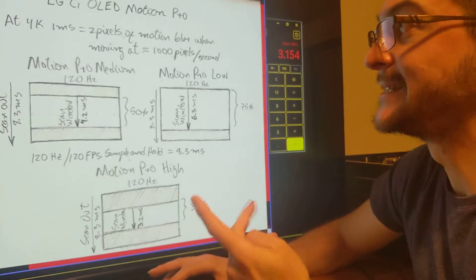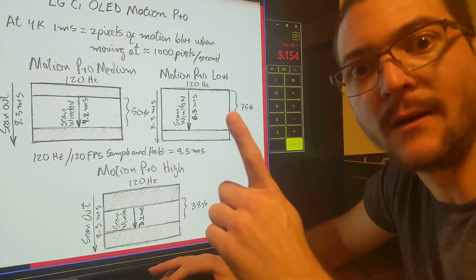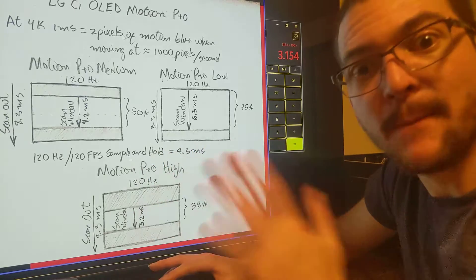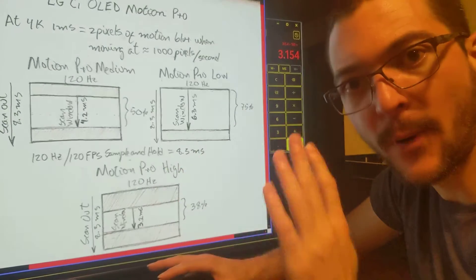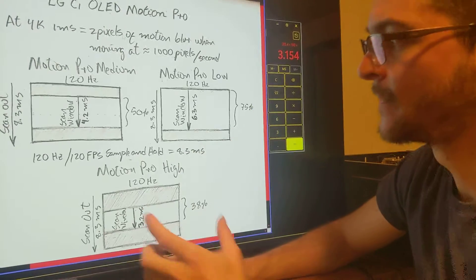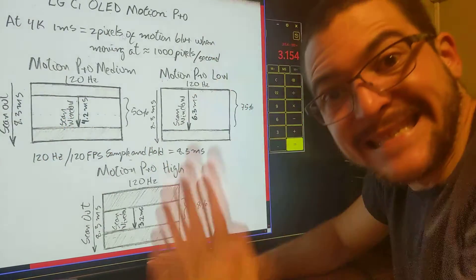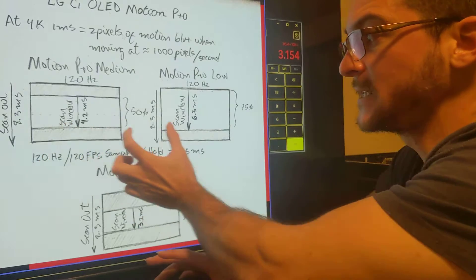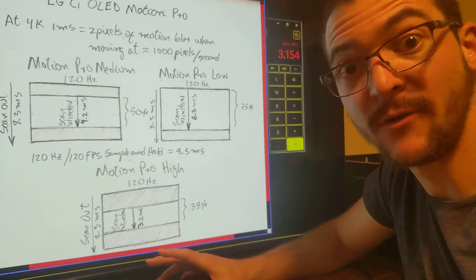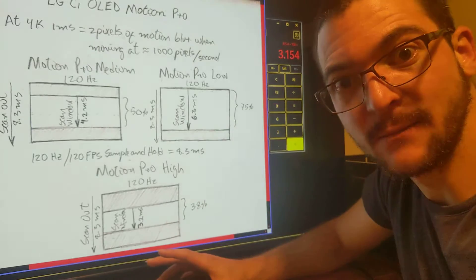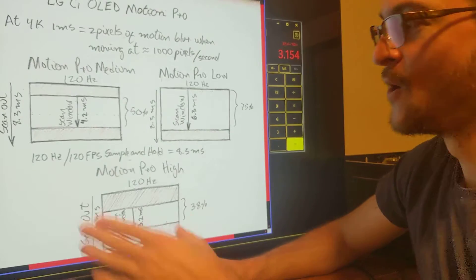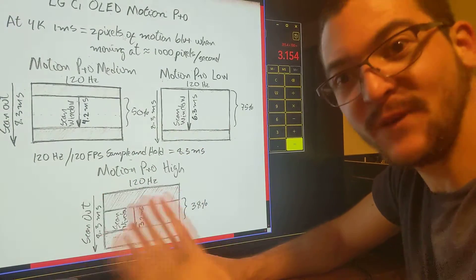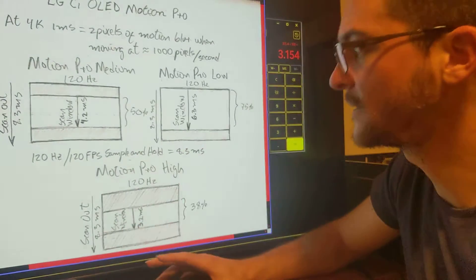The ideal is to get 1 pixel of motion blur, meaning at that given speed you are not getting any visible blur. Having perfect motion clarity means the object looks exactly the same whether it's moving or still — there's no distinction whatsoever. That's what you want: when you move the camera in a game, it looks the same as if you're not moving the camera at all.